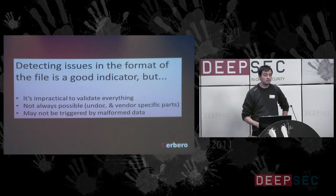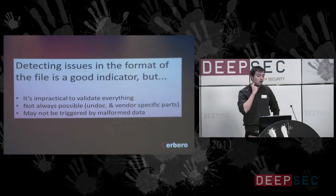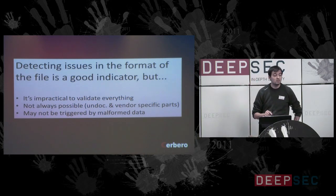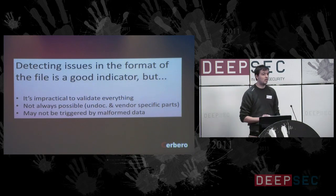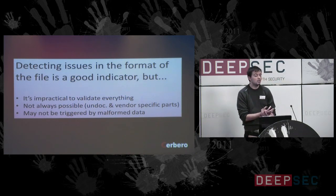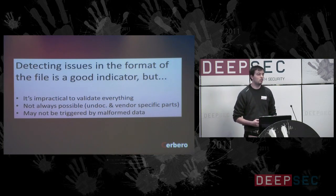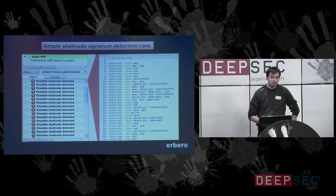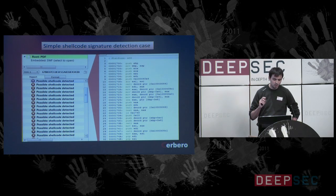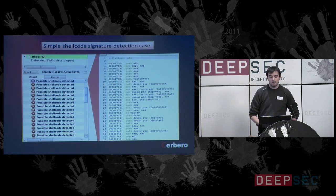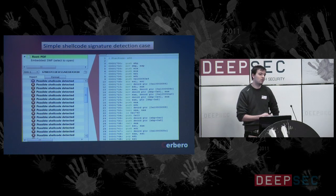Detecting issues in the format is a very good indicator for buffer overflows, but it's impractical to validate everything. It's not always possible because some documents have parts which are undocumented or vendor-specific, and it may not be triggered by malformed data — it could actually be triggered by data which is completely valid according to the specification. Here we have a very simple shellcode signature. This malware PDF embeds a Windows executable, so we're detecting lots of shellcode, just to give an idea.